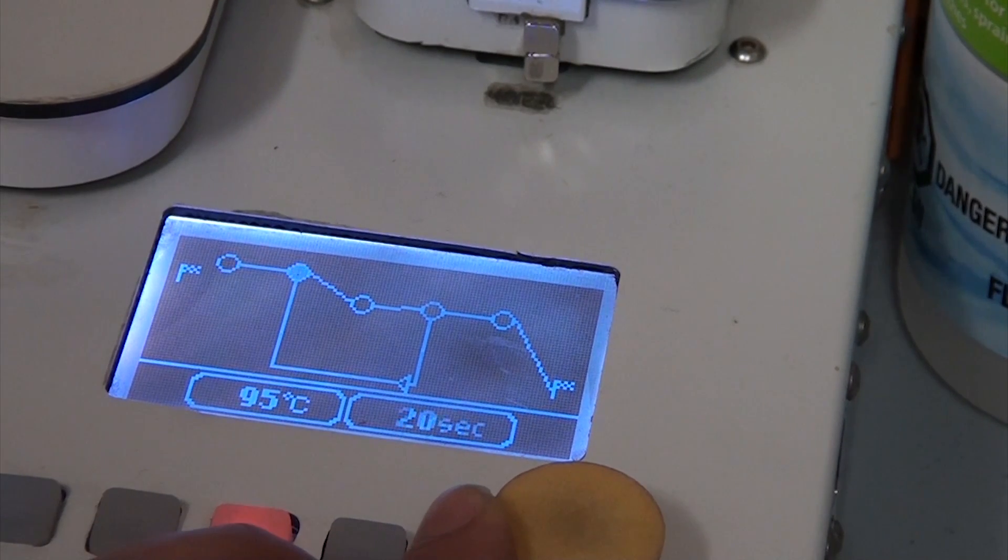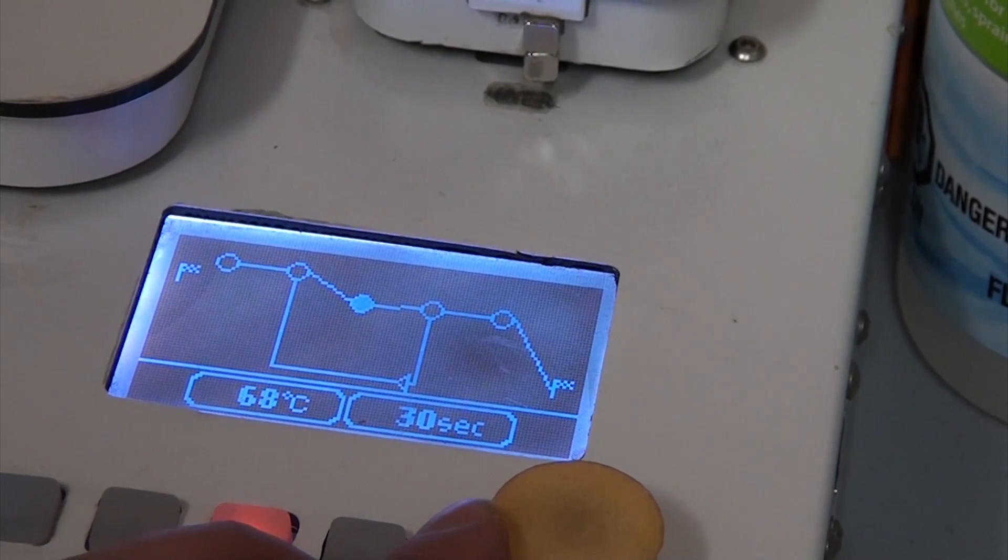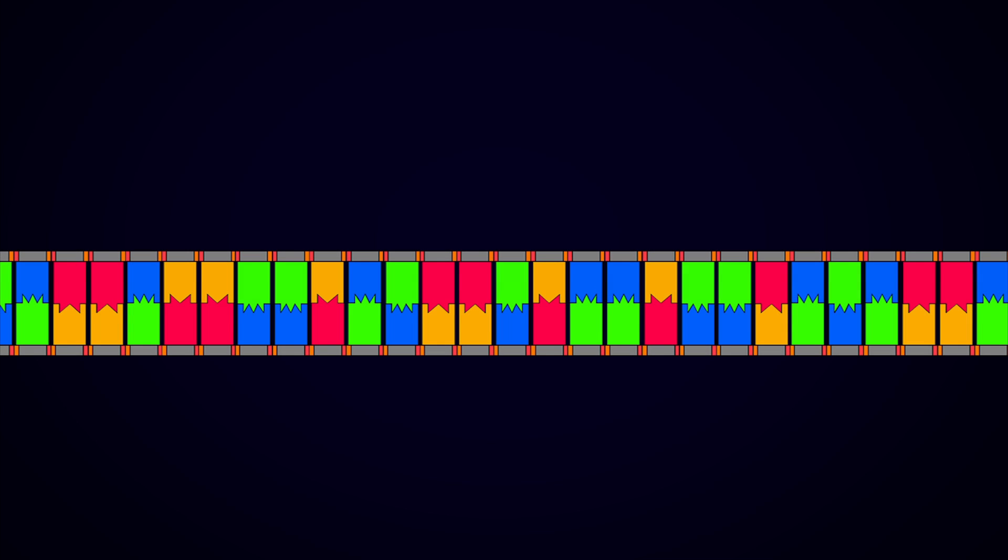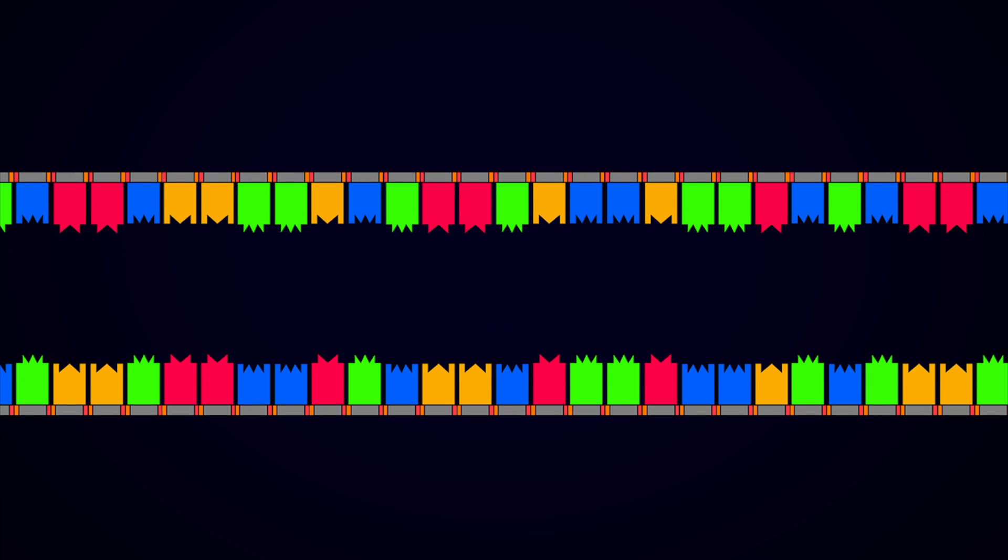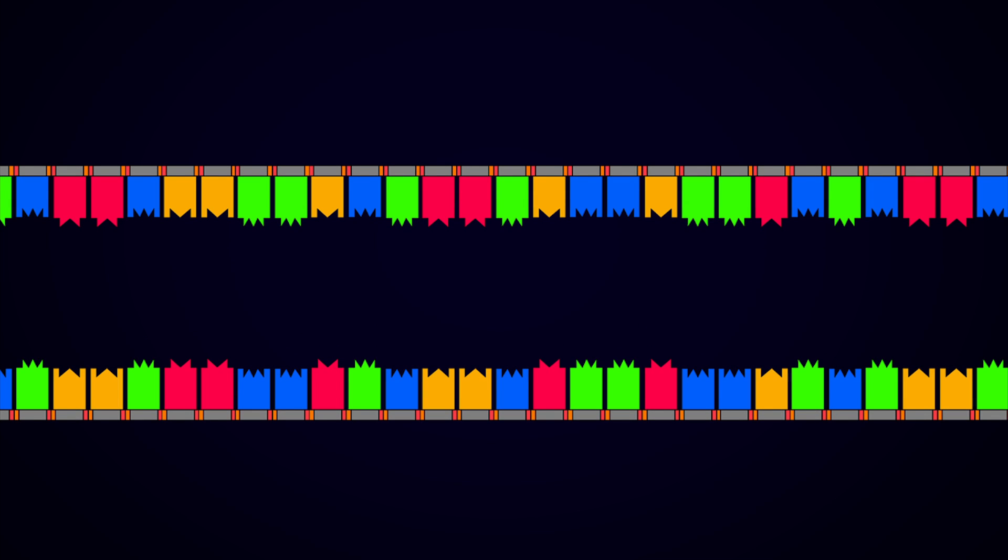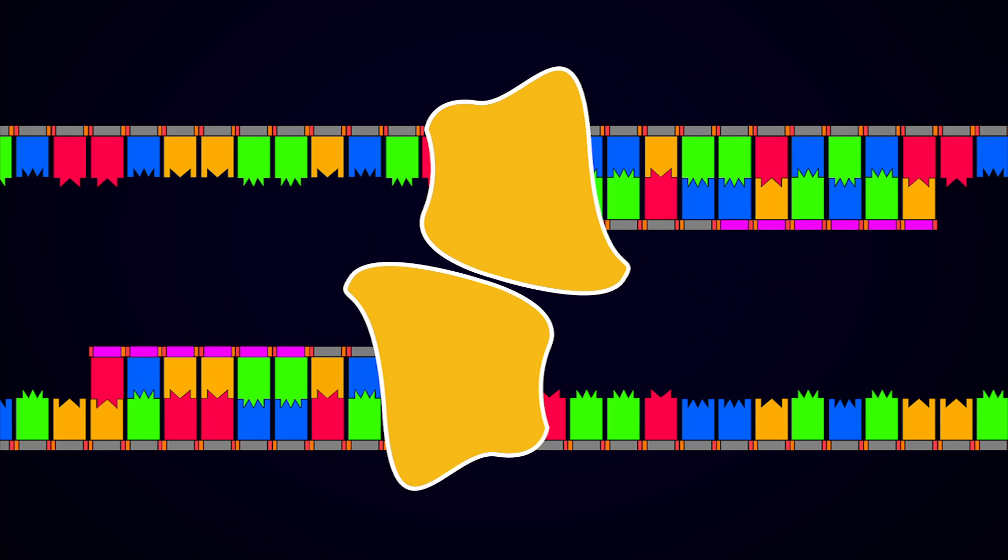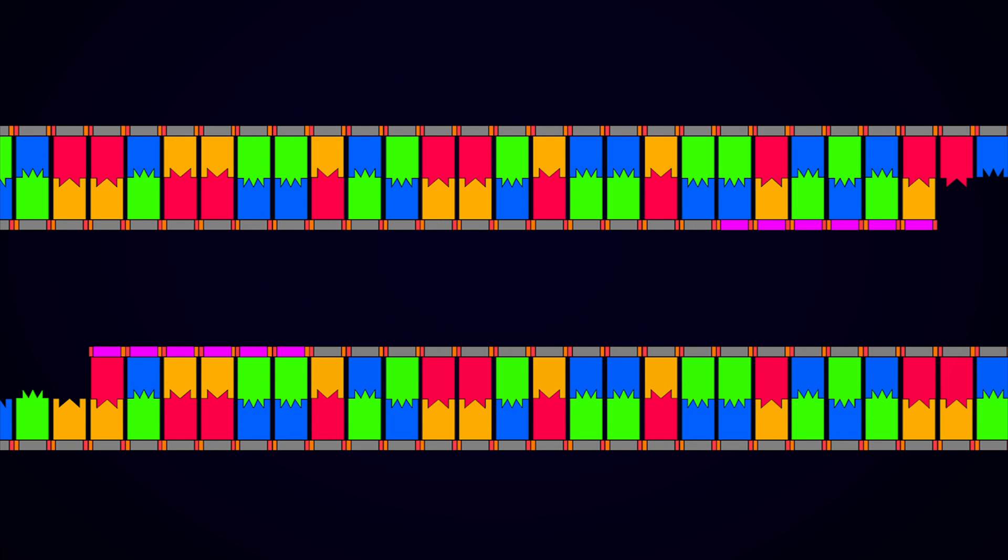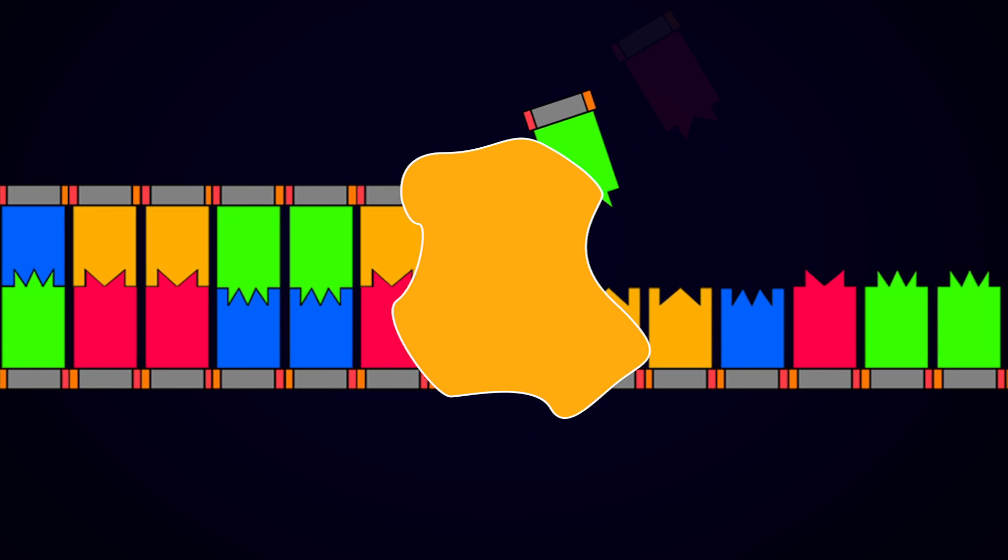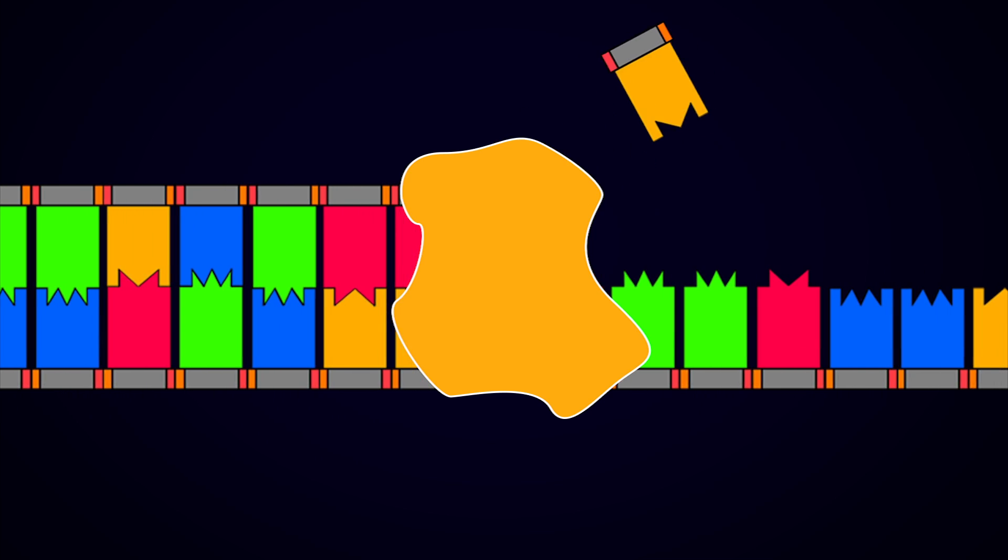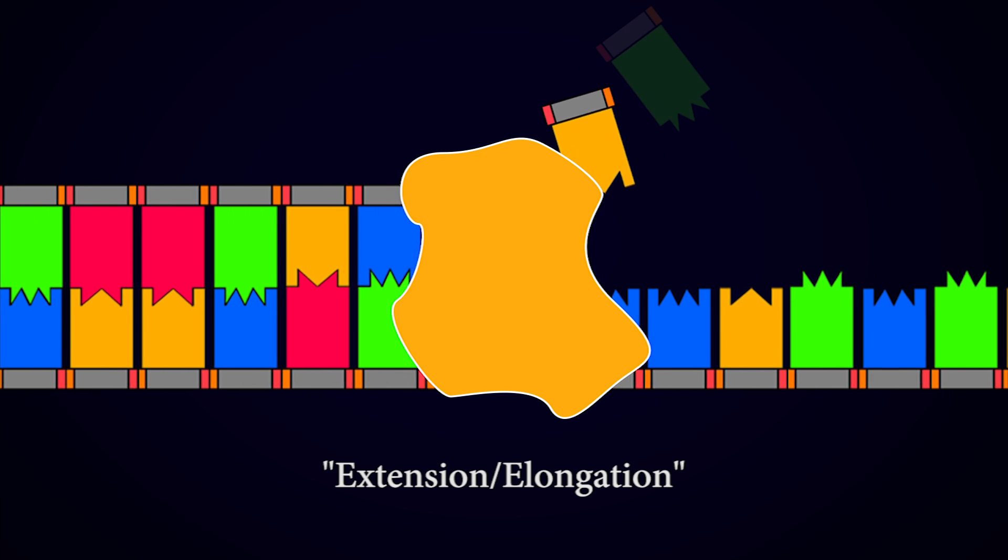We run the reaction in a device called a thermocycler. Basically it raises and lowers the temperature of the mixture so that different parts of the reaction happen in sequence. First we heat everything up really hot to 95 degrees Celsius. This causes the DNA to melt and the two strands to separate. This is also why we need a thermostable enzyme or this step would destroy it. Then we cool things down to a lower temperature called the annealing temperature. At these temperatures the primers will stick to the now separated DNA strands. This sticking of the primers to its complementary sequence on the DNA template is called hybridization. Finally we raise the temperature up again to 72 degrees and at this temperature the DNA copying enzyme becomes active. It grabs onto the annealed primer and extends the strand using free-floating DNTPs in the solution, synthesizing a complementary strand to the template DNA. This is known as extension or elongation.